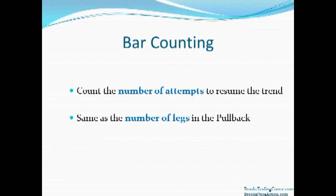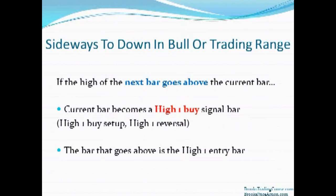With bar counting, I'm counting the number of attempts that the trend makes to resume, and it's the same as the number of legs in a pullback. For example, in a two-legged pullback, an ABC correction: after the first leg down, the market tries to turn up — that's a high one. The market turns down again for a second leg, and when it tries to resume up again that second time, that is a high two buy setup in a sideways to down market, in either a bull trend or a trading range.